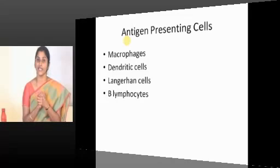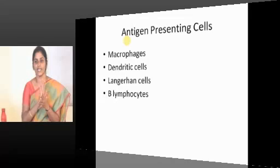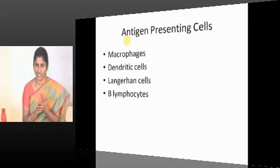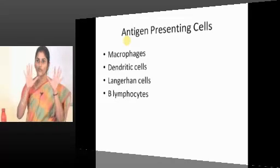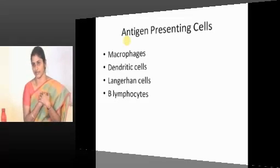Only helper T cells are the masters. For B lymphocytes, they don't need any role of antigen presenting cells. By virtue of their BCR, they take up the antigen directly.